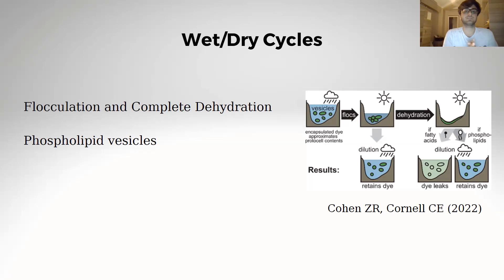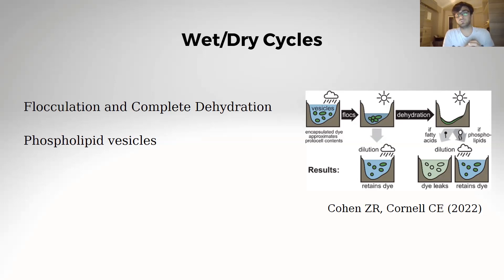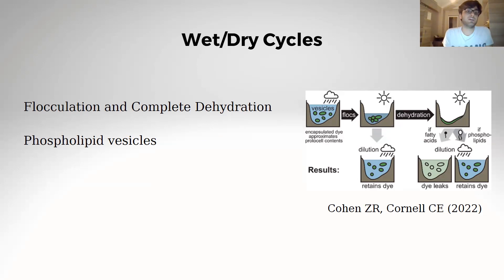They also did this wet-dry cycle process with phospholipid vesicles. Phospholipid vesicles are more resistant to these wet-dry cycles compared to fatty acid vesicles. This can be seen as a transition to our modern membrane, and may be a driving force and selection advantage for phospholipid vesicles over fatty acid vesicles.